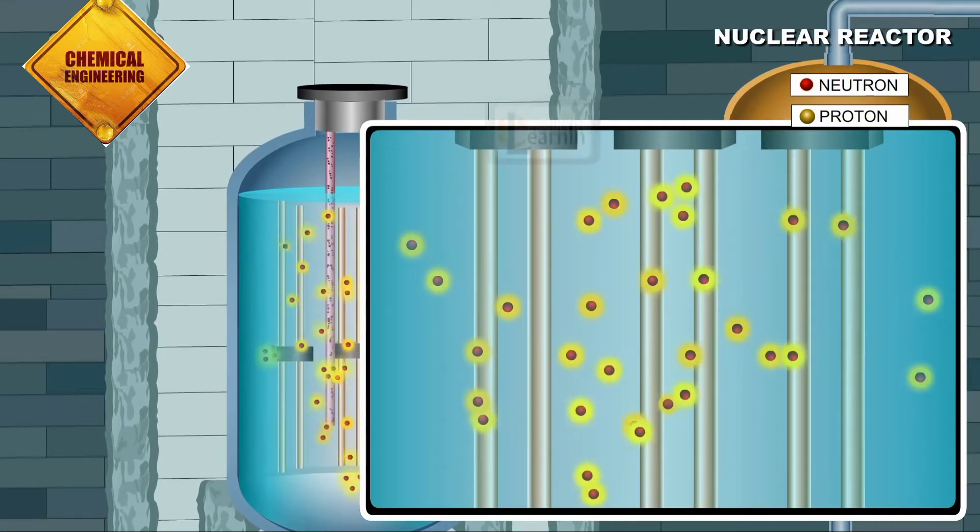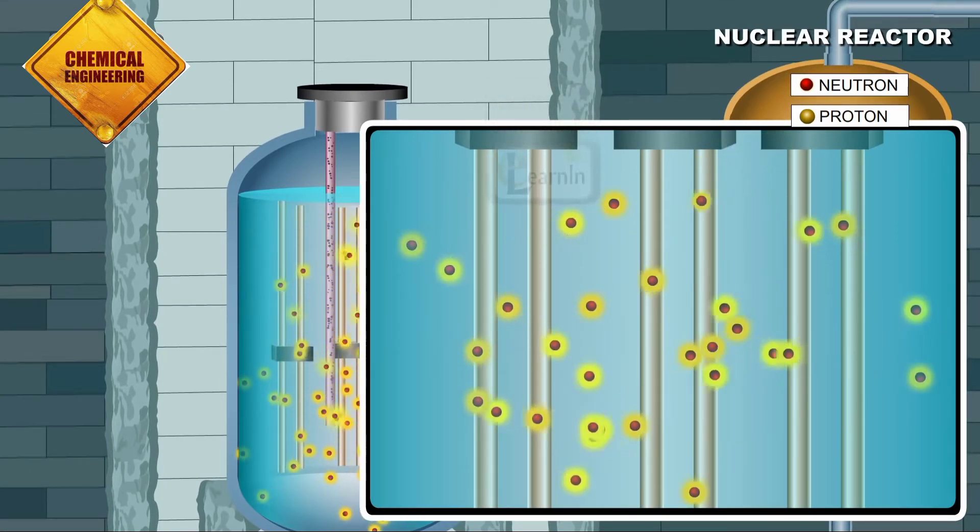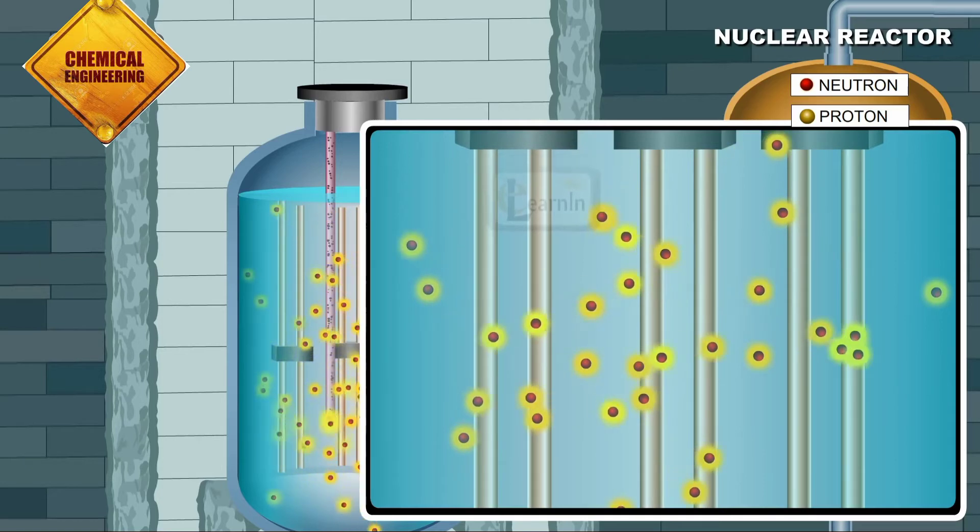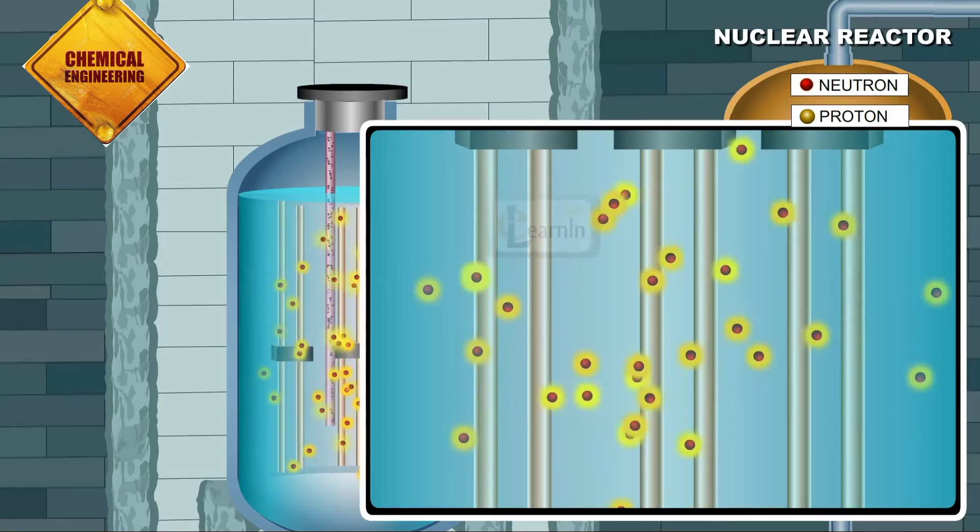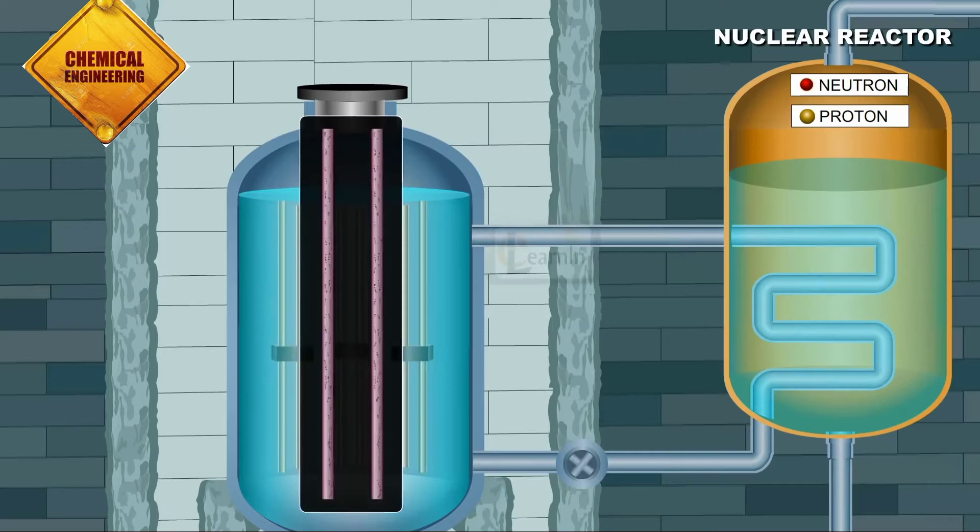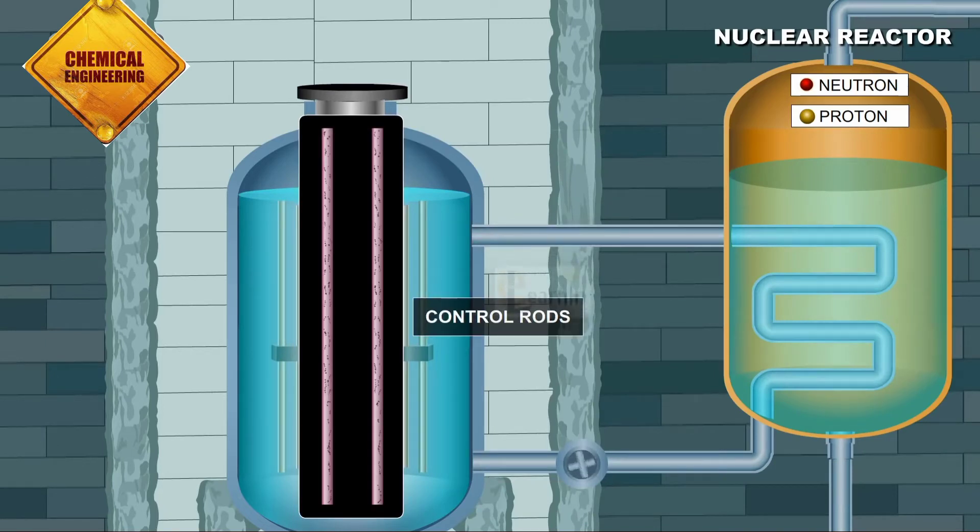By controlling the number of spare neutrons available at any given time, the rate of nuclear fission chain reactions can be controlled. This control on the fission reaction can be maintained using control rods.